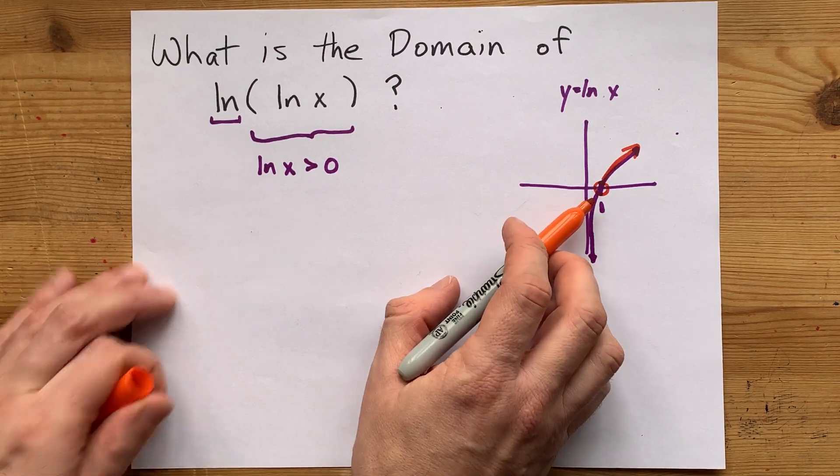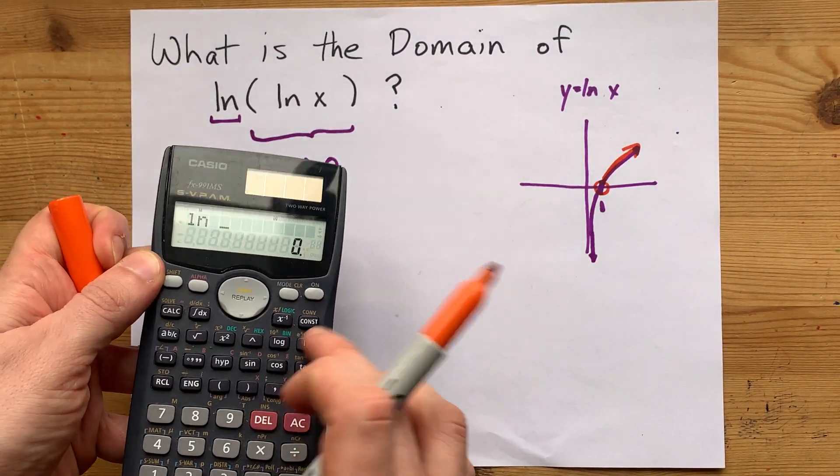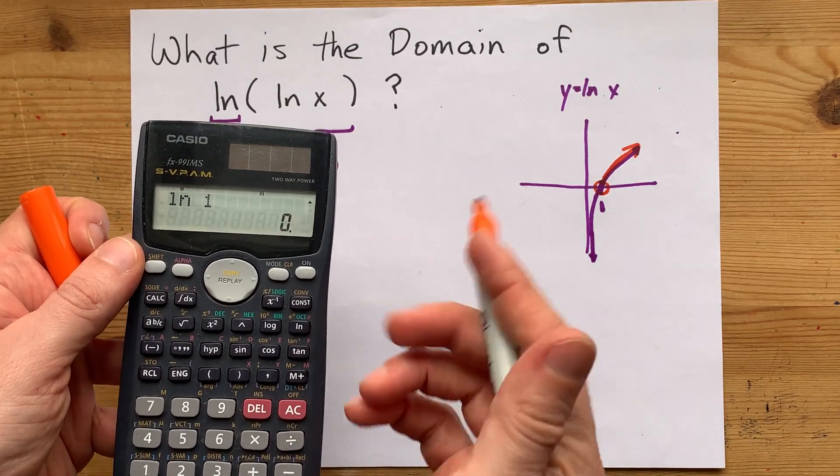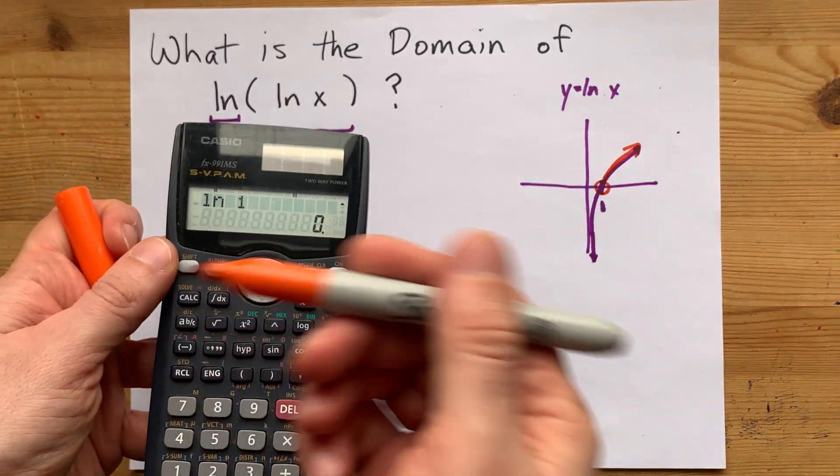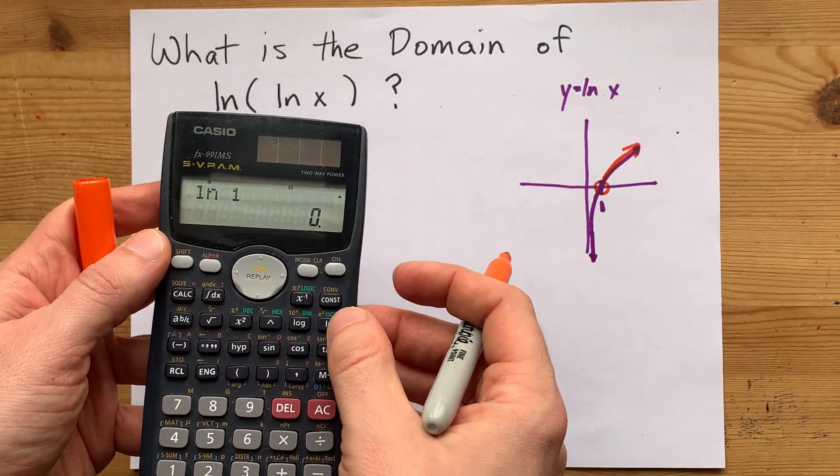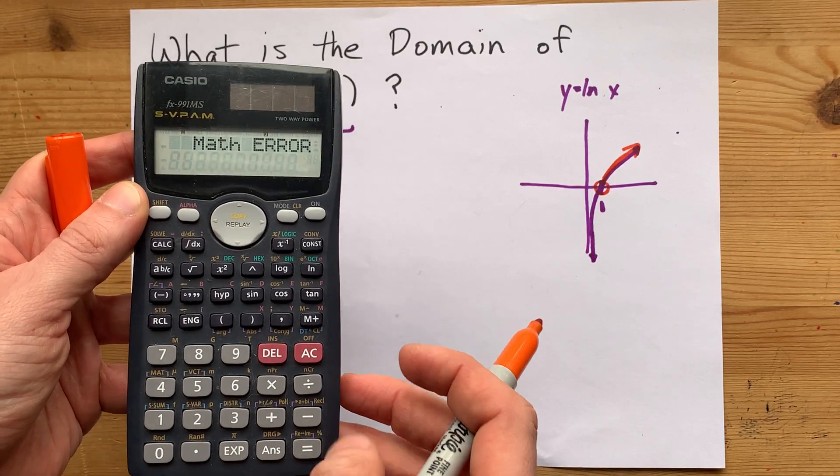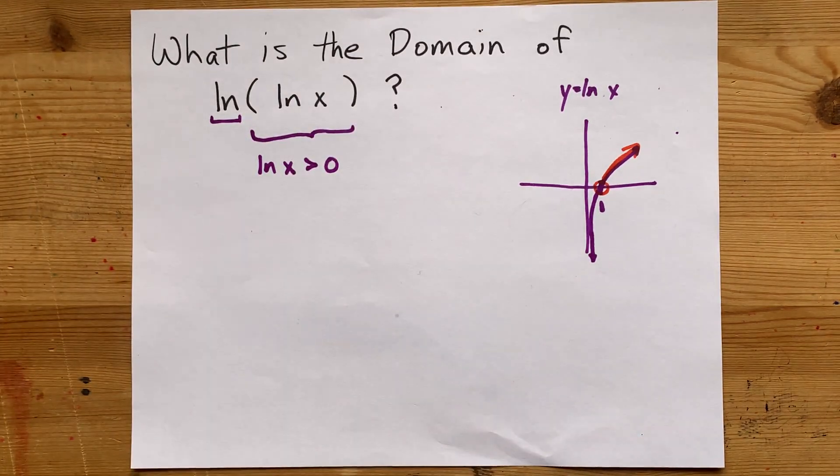If you plug in 1 and you take the ln of 1, you get 0, but then if you take the ln of that, you get an error because you can't take the ln of 0. ln ln 0—I mean ln ln 1—gives you the error for that reason.